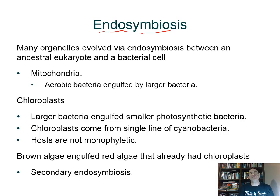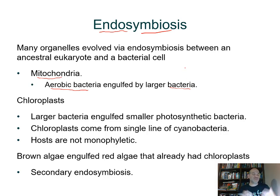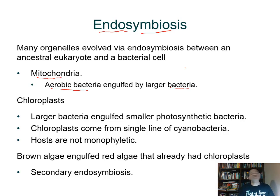Mitochondria would have arisen from an aerobic bacterium — just as mitochondria use oxygen for metabolism to generate ATP. A larger bacterium, perhaps one starting to form an extensive endomembrane system, engulfs an aerobic bacterium. Instead of digesting it, they start relying on each other over an extended period of time. Eventually, the mitochondria becomes inseparable and can no longer live as a free-living bacterium.